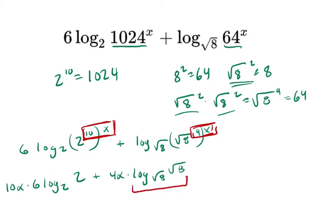Well, this right here is just 1, square root of 8 to the 1st is itself. And this right here is 1 because 2 to the 1st is itself.